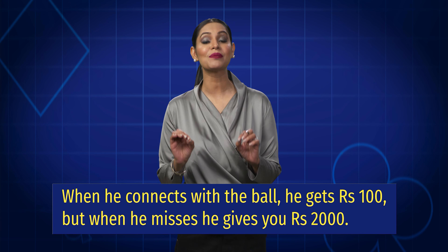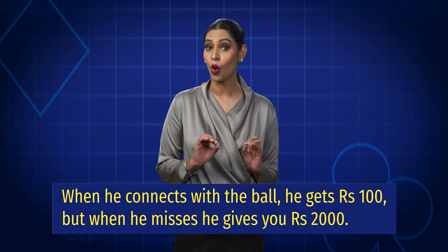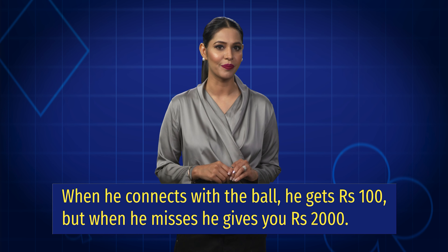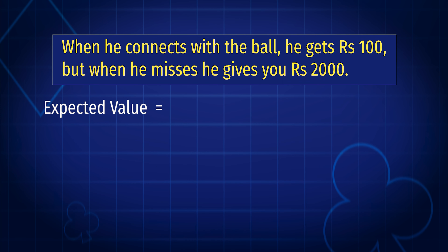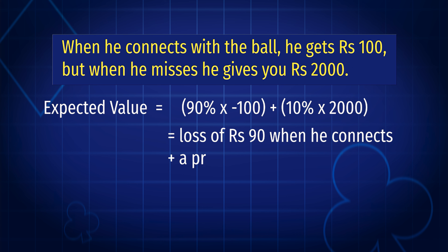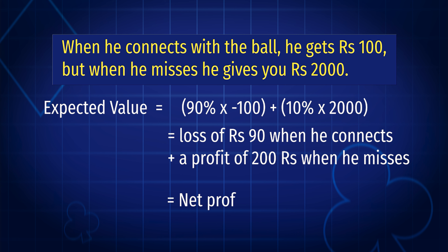Once again we can calculate this by multiplying the probability of the two outcomes with the profit or loss of each outcome. So our EV in this bet is 90% into minus 100, plus 10% into 2000, which equals a loss of rupees 90 when he connects plus a profit of rupees 200 when he misses — a net profit of rupees 110.